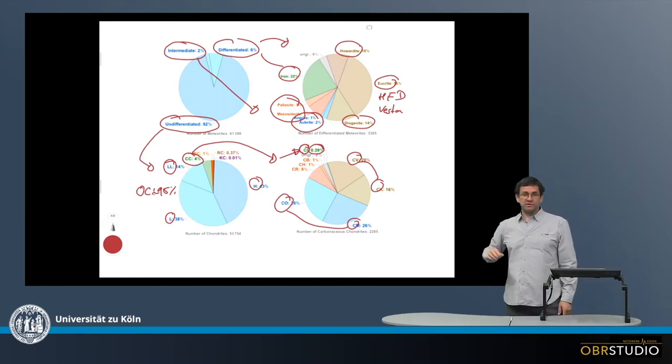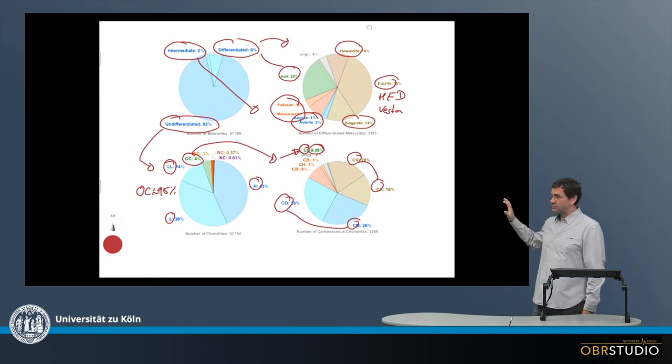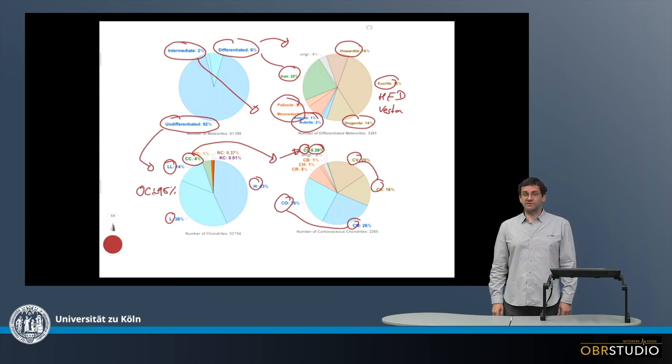And of course, it would be possible to construct other pie charts, also for example discriminating between falls and finds, and maybe petrologic type, weathering degree or so would also be interesting. So, this is just a very brief glimpse at some of the most interesting statistics of meteorite types.